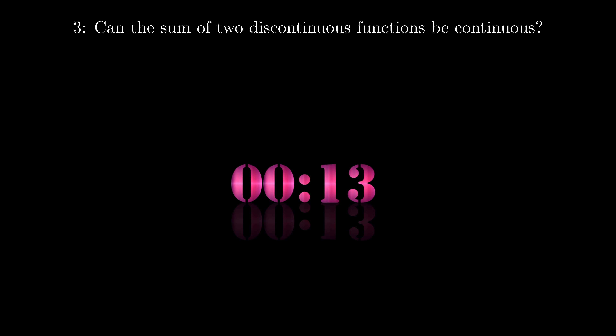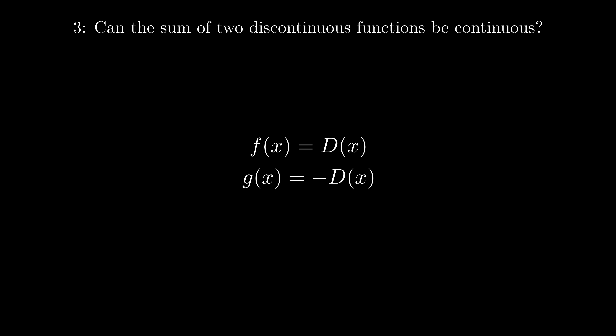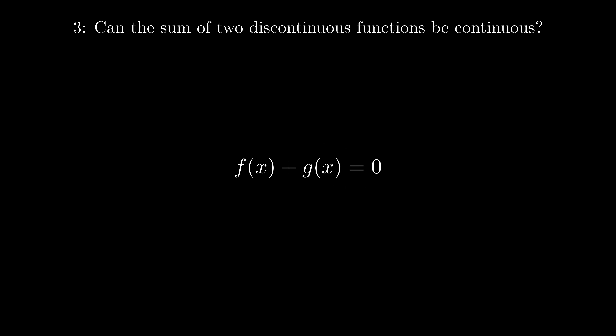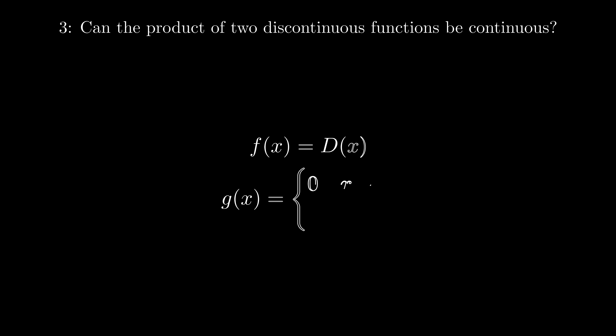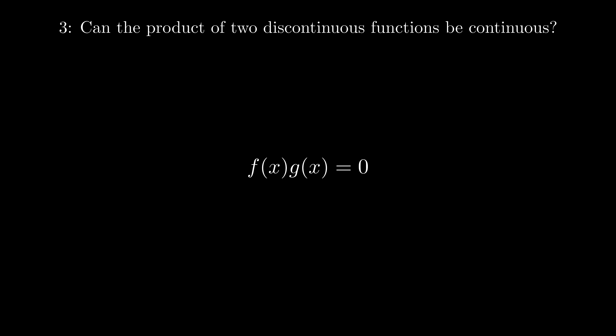Now you know the drill — the answer to the third question. If one function is the Dirichlet function and another is the negative of the Dirichlet function, when you add them together you get zero, which is a continuous function. For the product: define g(x) as zero when x is rational and one when x is irrational. Both f(x) and g(x) are discontinuous, but multiplying them together gives zero — a constant, therefore continuous.